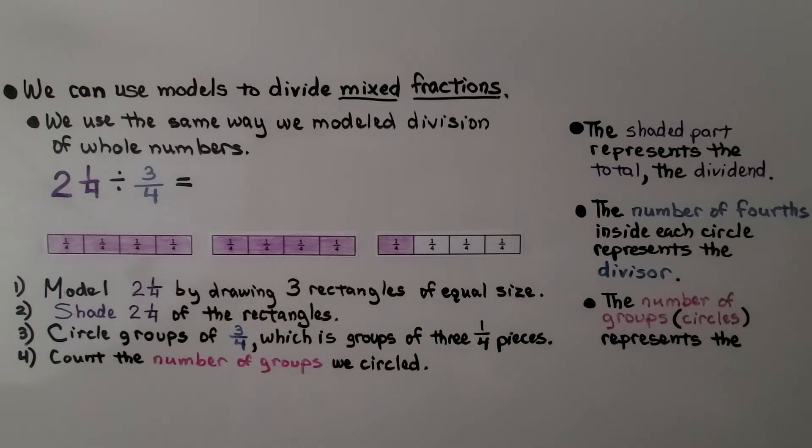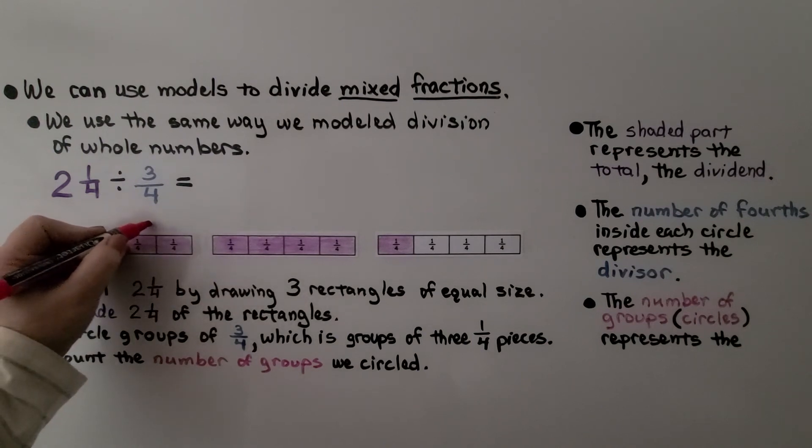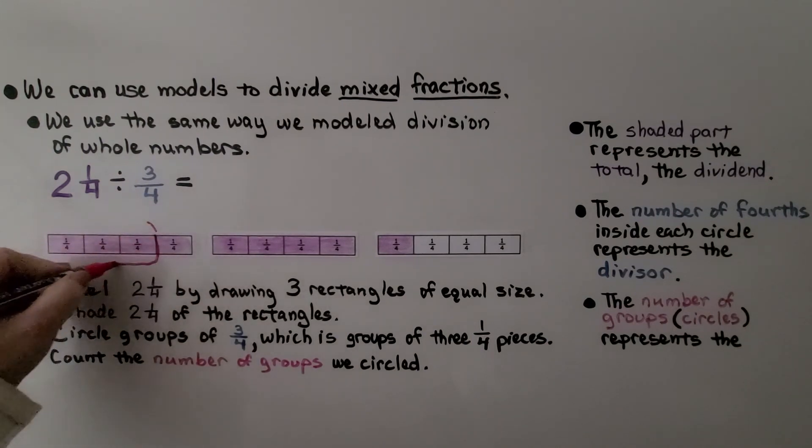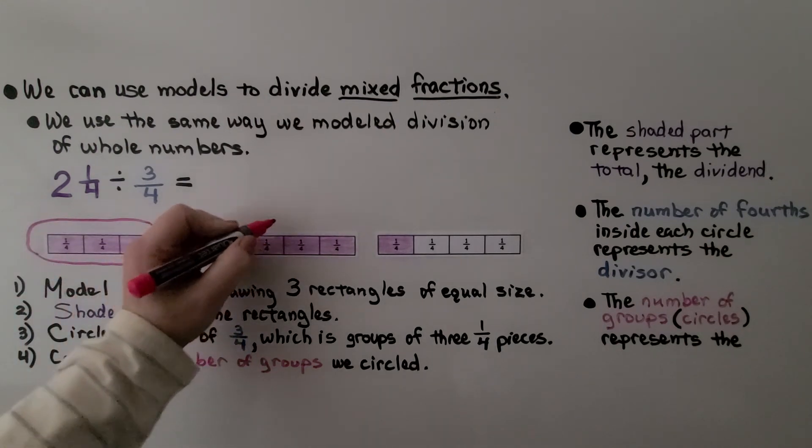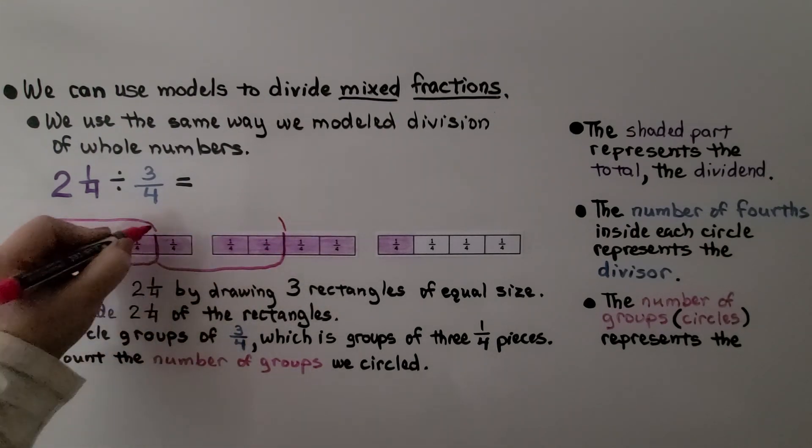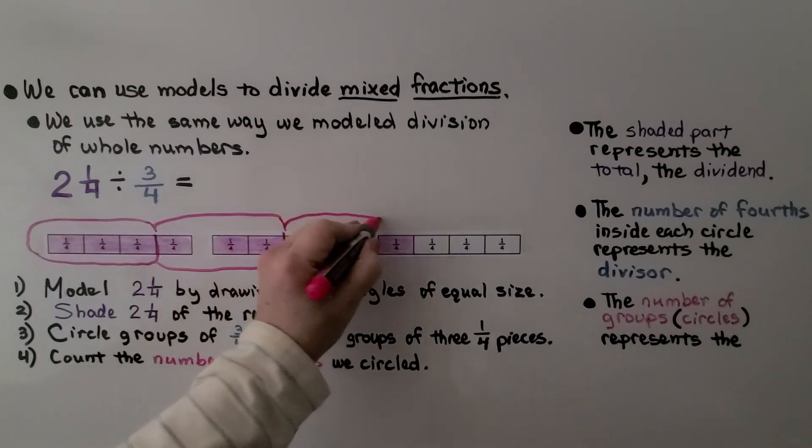The number of fourths inside each circle represents the divisor. So we're going to circle three-fourths. We've got a three-fourths here. We've got one, two, three. That would be the other one. And we have one, two, three. We have another three-fourths.